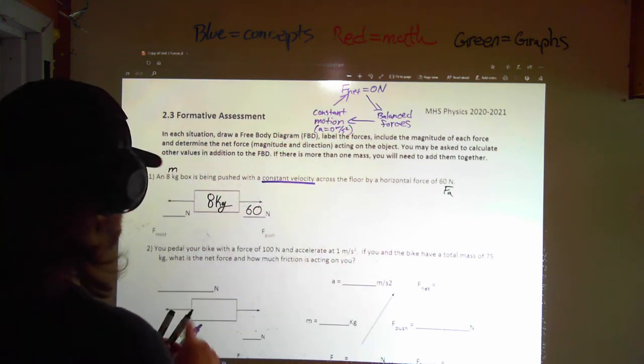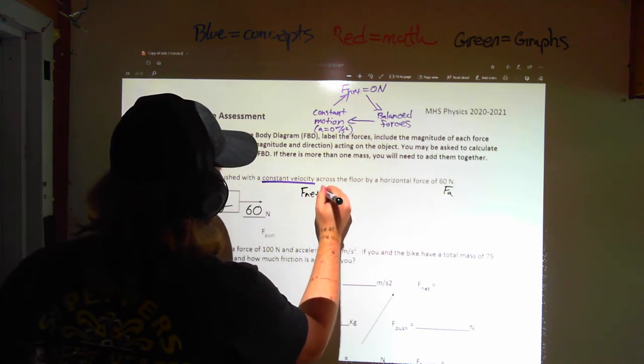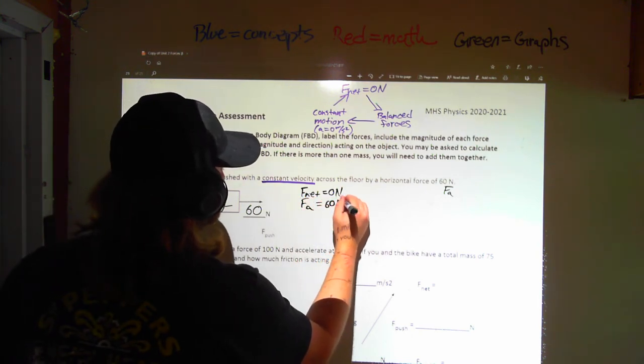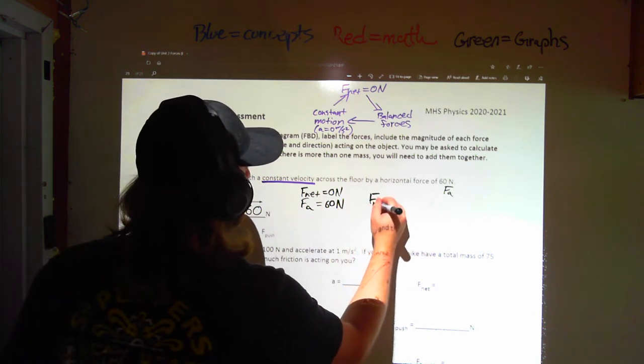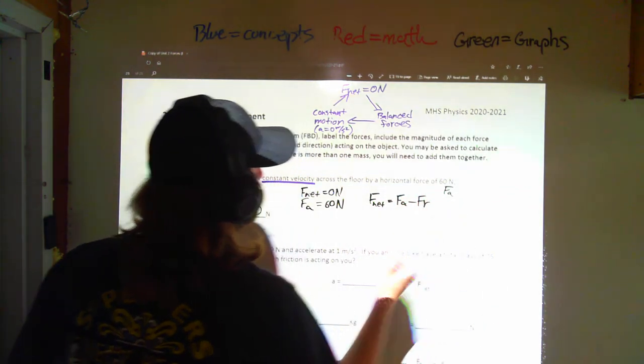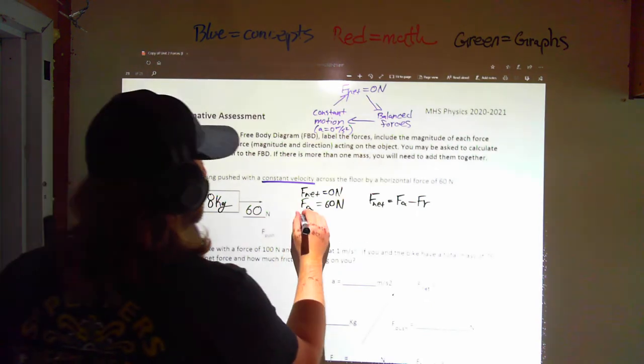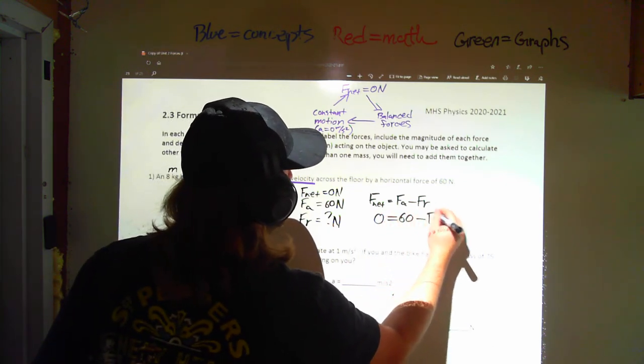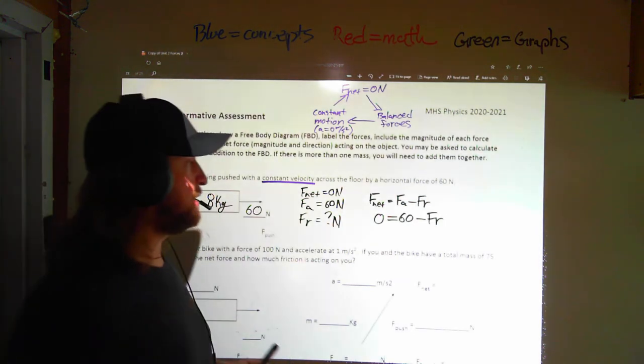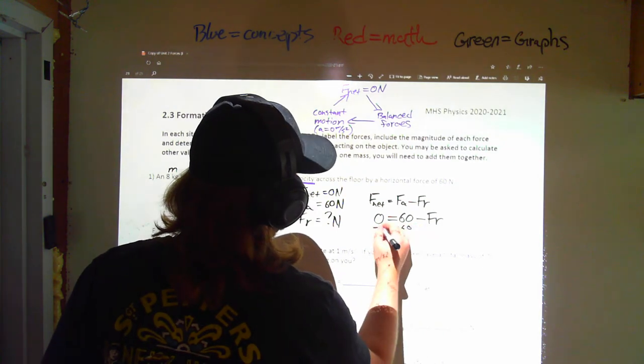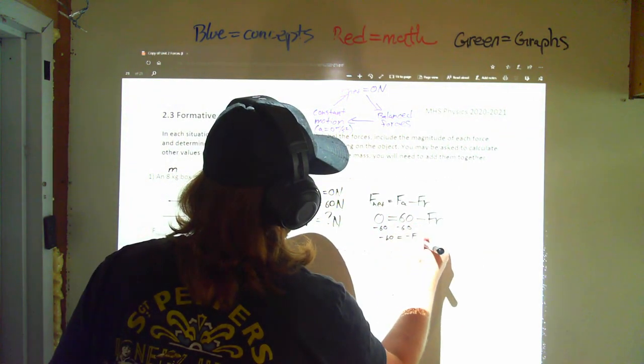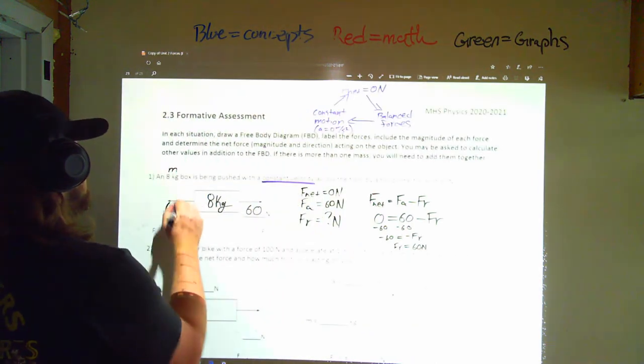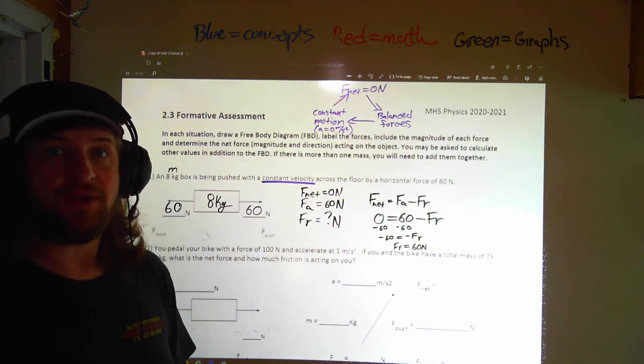We know we're pushing with 60 newtons of force, so we know F net is zero newtons. We know the force applied causing motion is 60 newtons. So if we have the equation F net is force applied minus the force resisting, and we want to know what the resisting force is, we know zero is equal to the 60 newton force we applied minus whatever newton force is resisting. Subtract 60 away from each side. Negative 60 equals negative force resisting, or the force resisting is 60 newtons. Come over here, attach that to the resisting side of our diagram. Great!